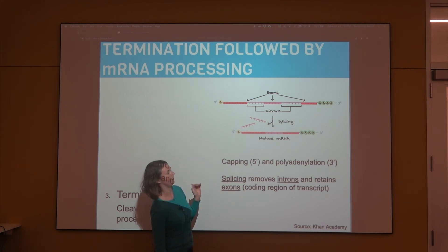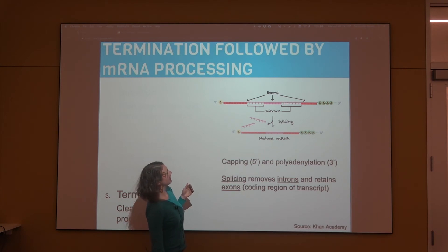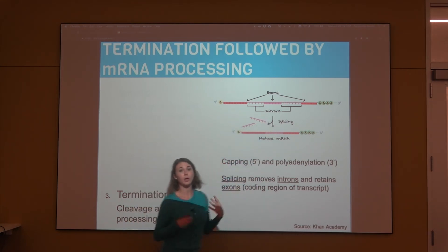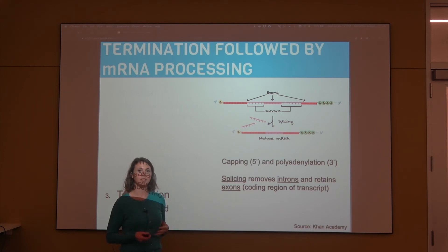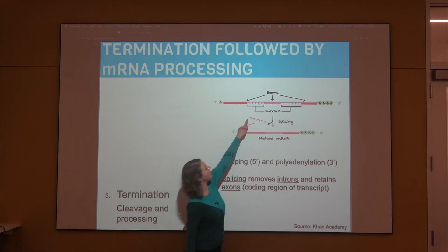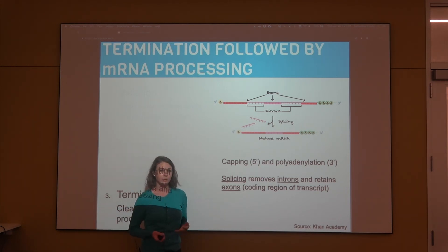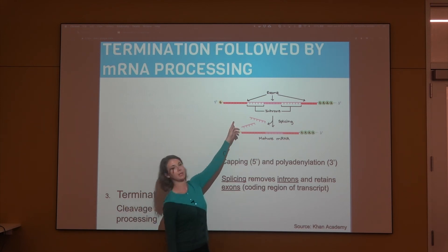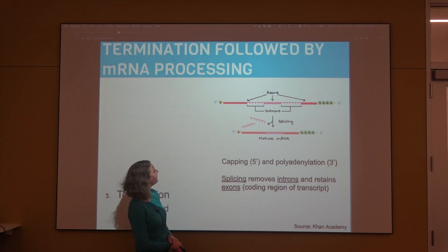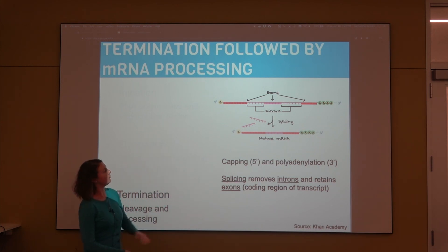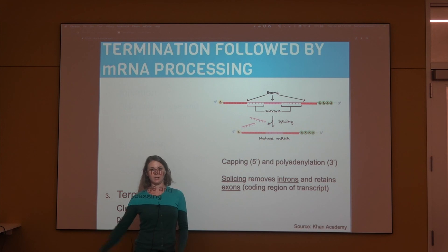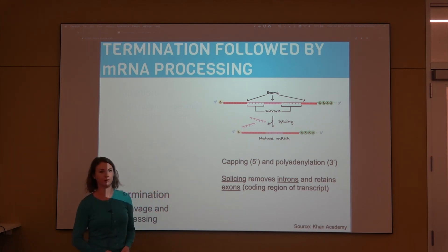Another major component of mature mRNA processing is splicing. Genes are made up of exons, which are called coding because they contain the trinucleotide codons that will ultimately be used to encode the amino acids for the polypeptide chain. We also have introns — eukaryotic genes also have introns, which are non-coding and do not contribute to the final polypeptide sequence, so they need to be spliced out before the mRNA goes into the cytoplasm. After splicing, we have our mature mRNA, which can be translocated into the cytoplasm to move on to create the protein.